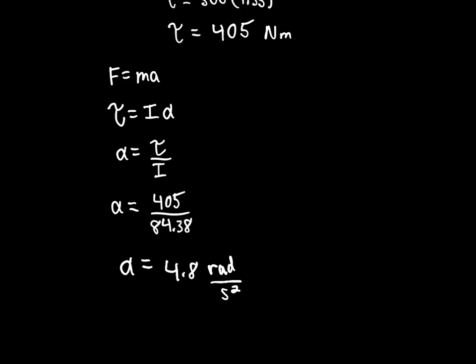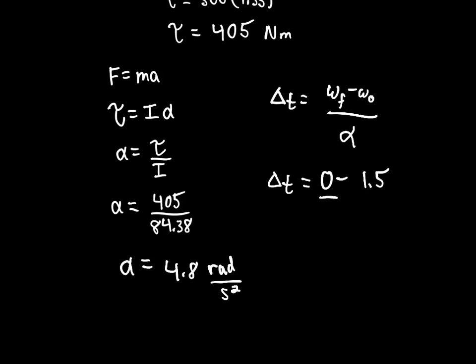Now I can go back to the kinematic equation: change in t equals omega-final minus omega-initial over alpha. Omega-final is zero (stopping), omega-initial is 1.5 radians per second, alpha is negative 4.8 (negative because we're slowing down). The change in time is approximately 0.31 seconds.